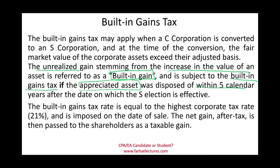If you wait five years as an S corporation before selling, you are no longer subject to the built-in gains tax. The IRS says if you hold it for five years, your objective was not to avoid taxes, and they'll let you pay taxes once at the shareholder level. The built-in gains tax rate equals the highest corporate tax rate — for our purposes, 21%. This could change, so use whatever the highest corporate tax rate is on the date of the sale, not the date of the conversion.